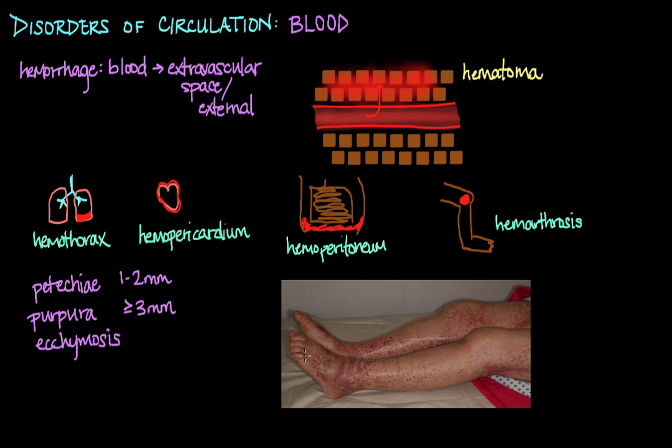And then these areas here, where there's sort of a bigger confluence of purpura, those would be ecchymosis. So basically anything that's larger than 1 centimeter, you would call an ecchymosis.